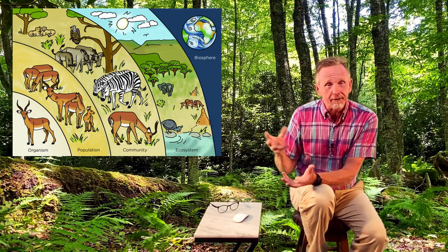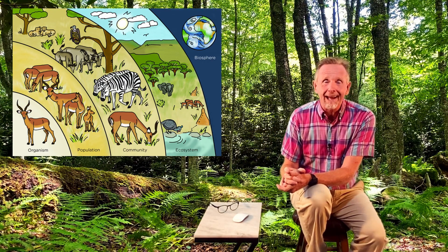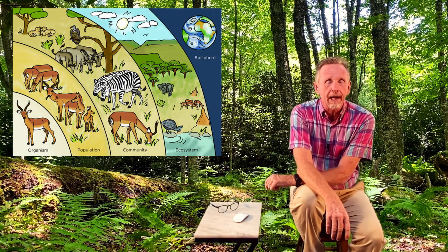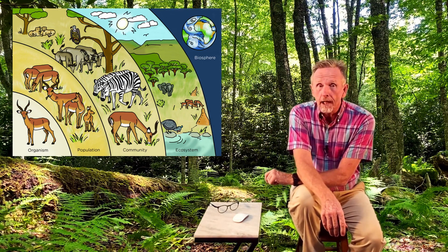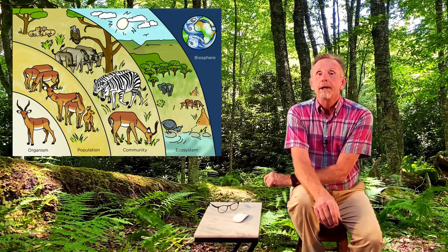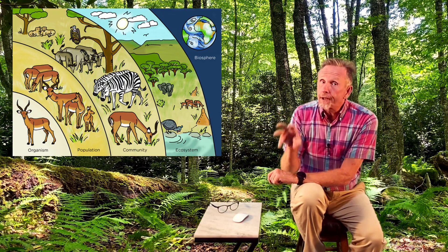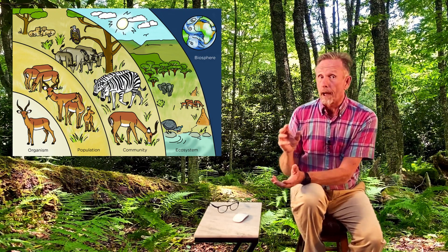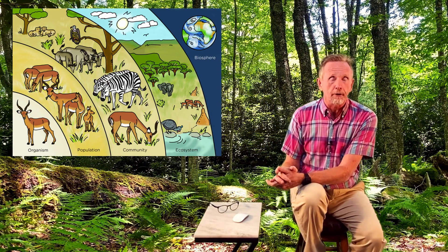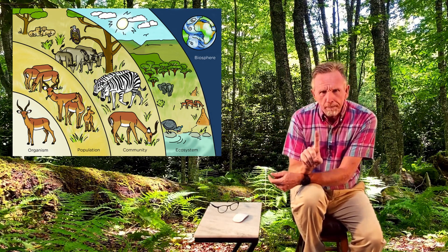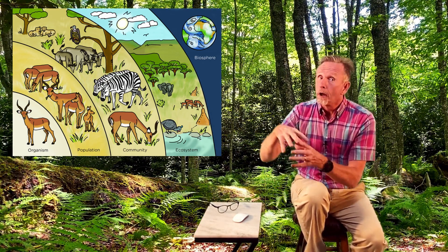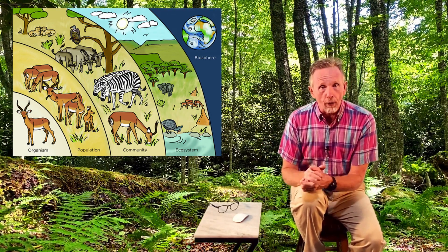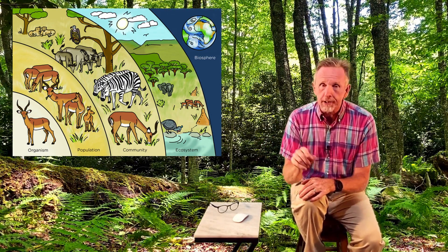In the deciduous forest, a community includes deer, rabbits, badgers, and how they interact. Populations would be all of the deer in a forest, or the population of possums, or all of the rattlesnakes in a desert — one particular species but all its members. At the organism level, we look at what one individual animal is doing.